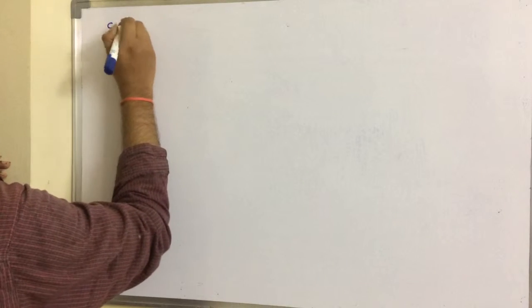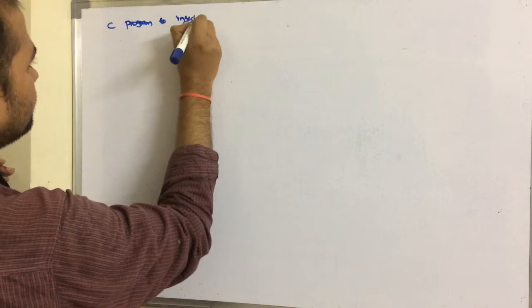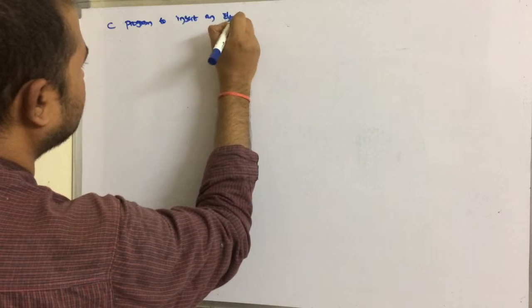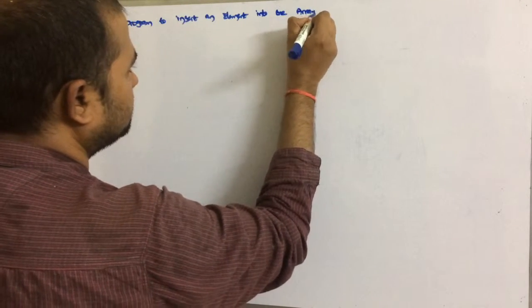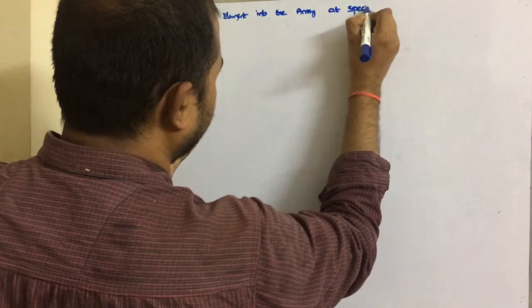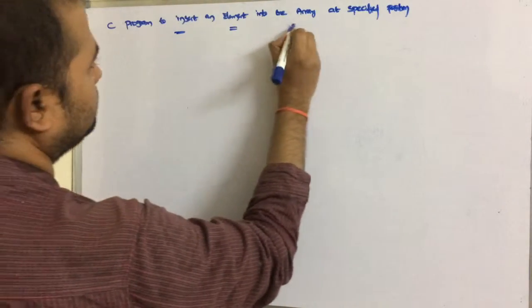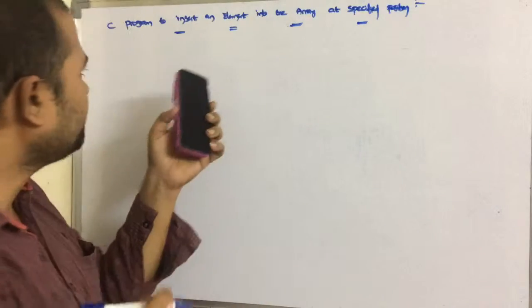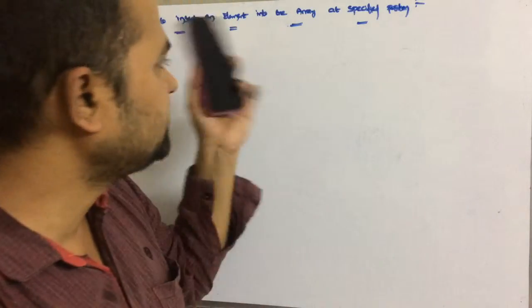In this class, we are going to discuss a C program to insert an element into the array at a specified position. So in this program, we have to insert an element into the array at a specified position. First, let us solve this problem mathematically.